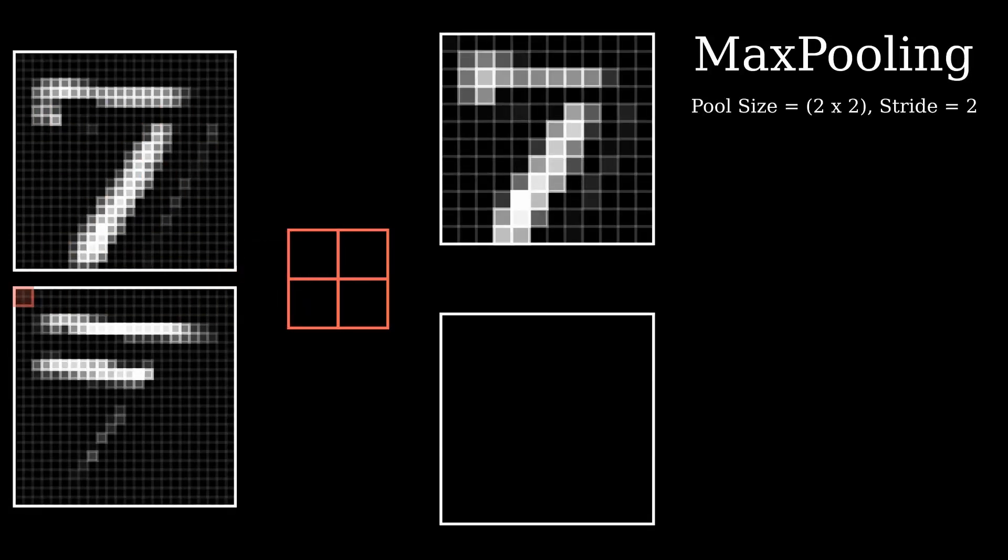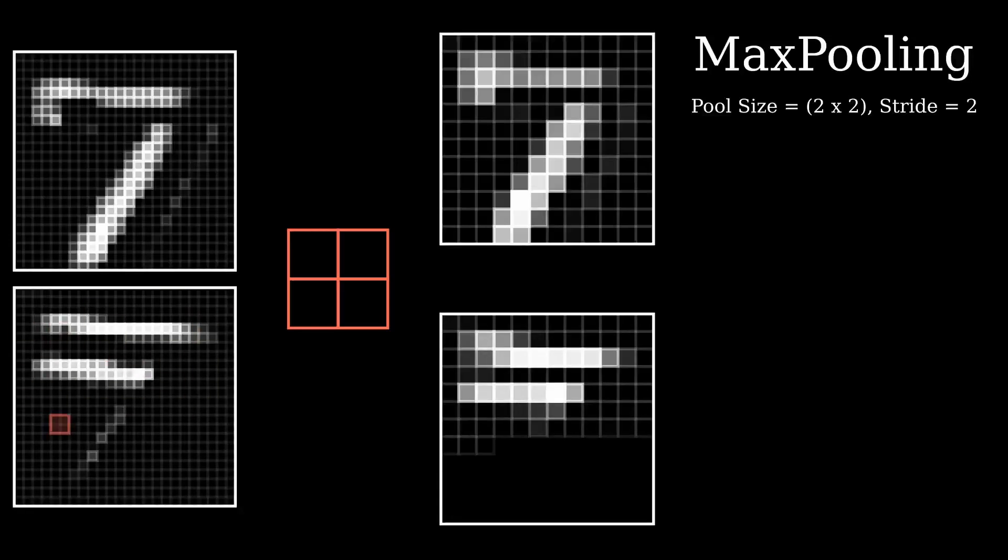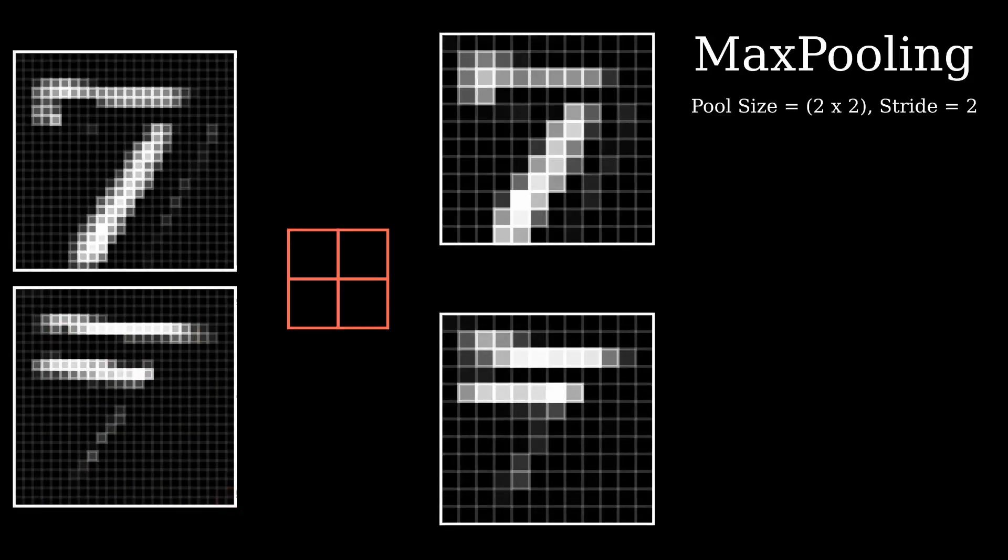The idea is that we want to extract only the most activated pixels from the first convolution and shrink the dimensions. As you can see, we have shrunk the dimensions from 24x24x2 into 12x12x2.